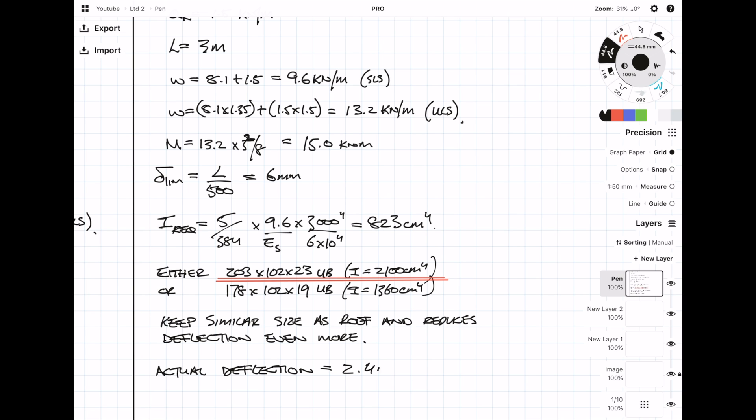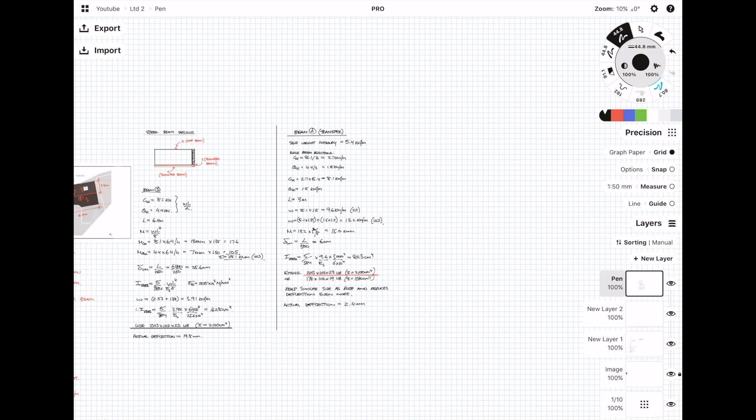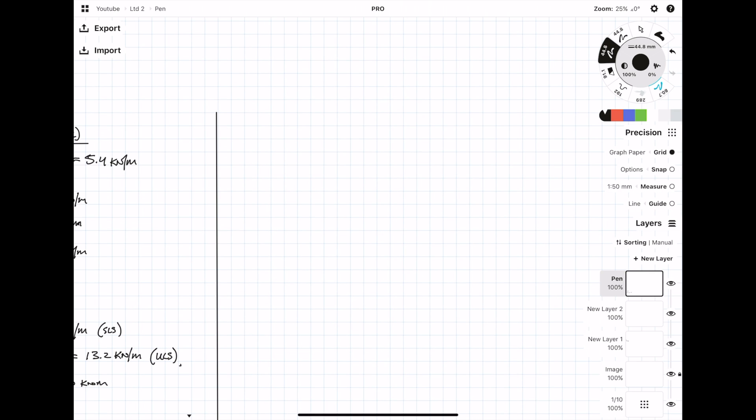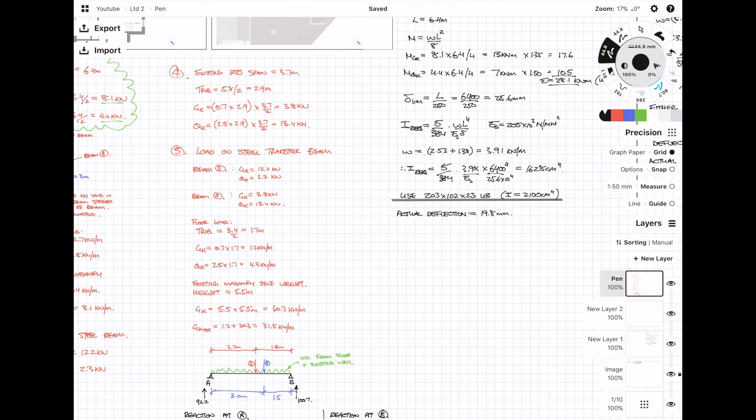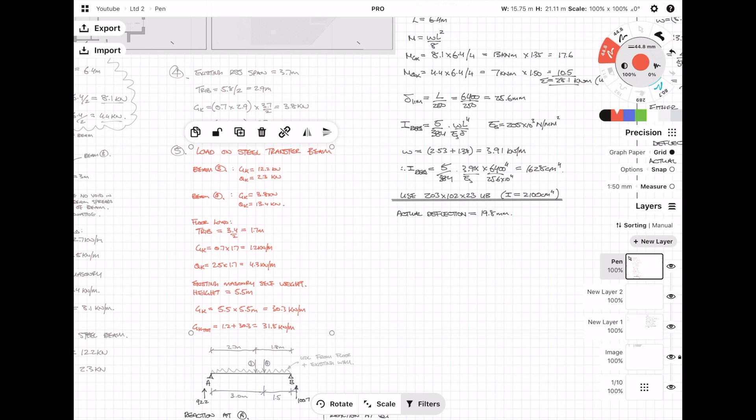Again, I calculate the actual deflection, which comes to 2.4 mm. Now moving on to the third beam, which is probably the most important beam because it's supporting a transfer beam which is supporting the roof beam. Again, because I've already done the load takedown in the previous part, all I need to do is copy across to my beam design.